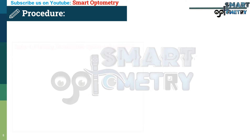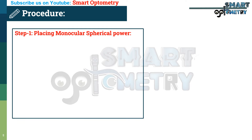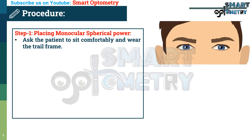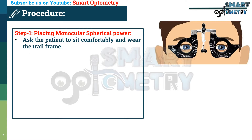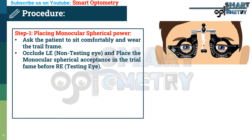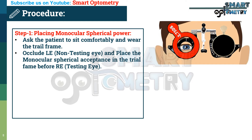Step 1: Placing monocular spherical power. Ask the patient to sit comfortably and wear the trial frame. Occlude the left eye (the non-testing eye) and place the monocular spherical acceptance in the trial frame before the right eye, which is the testing eye.